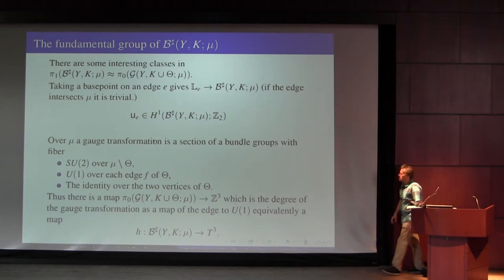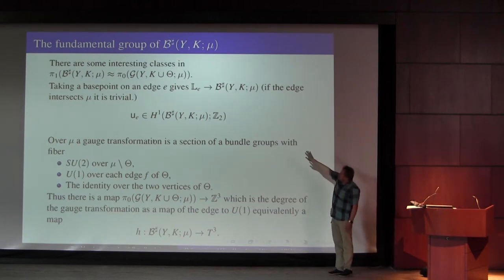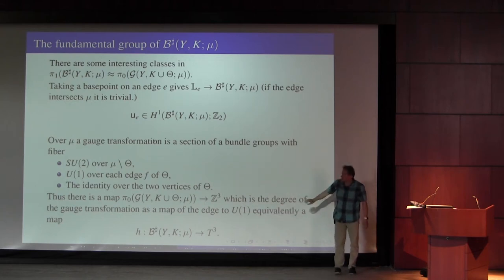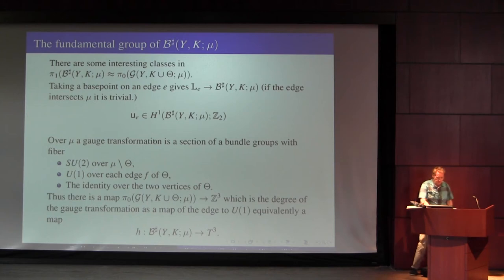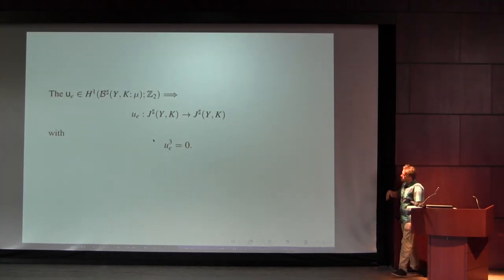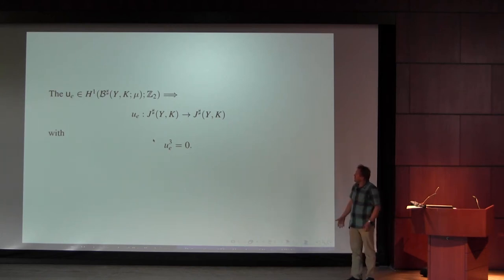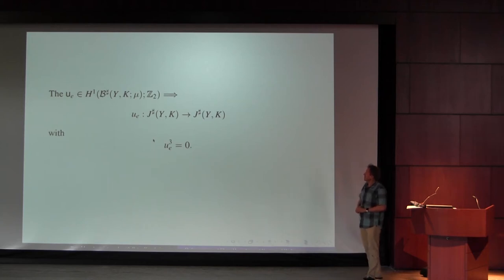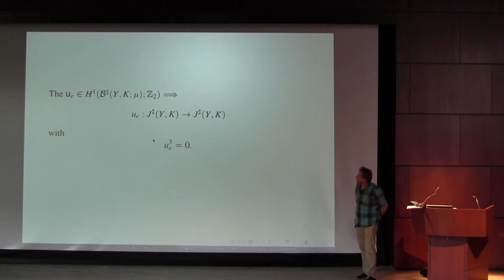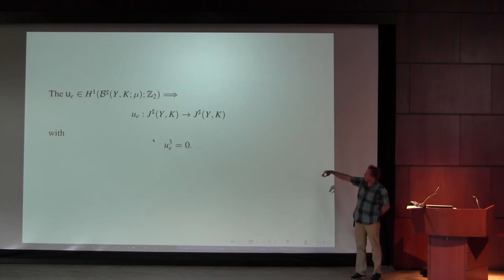The one-dimensional cohomology classes are going to give us interesting operators on our cohomology, on our Floer homology, and we're going to use twisted coefficients coming from this theta graph. Back in the J-sharp situation, this one-dimensional cohomology class — given a pair of critical points — I can evaluate that and count how many times a flow line passes through it, contributing to the Floer homology.